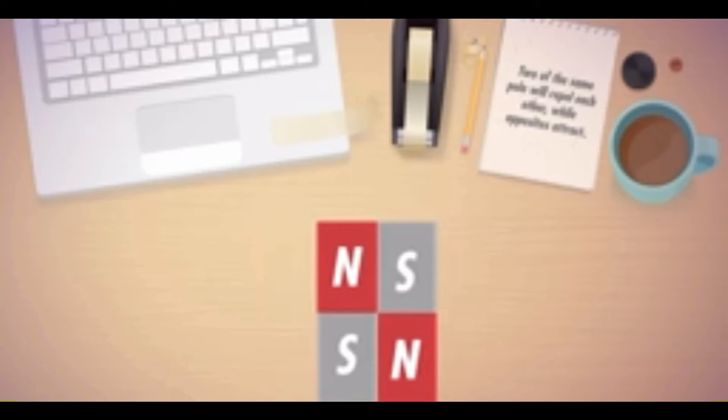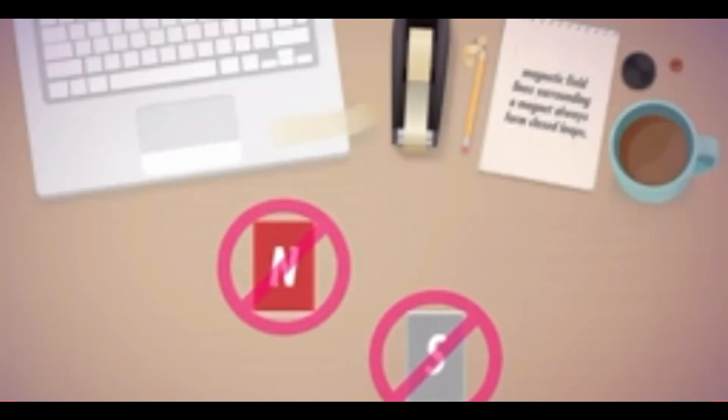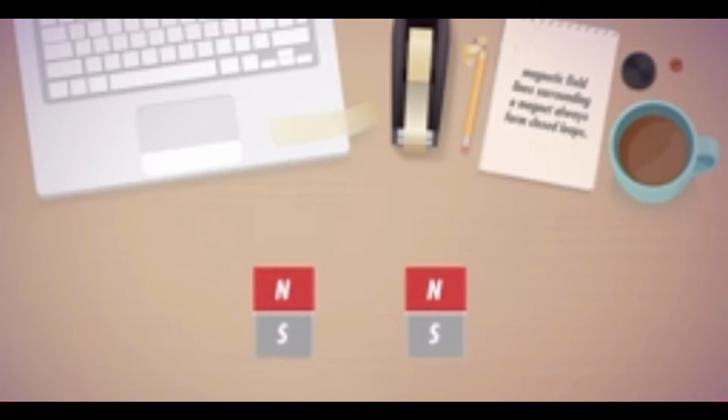Bar magnets with different poles attract each other. Bar magnets with same poles repel each other. If a bar magnet is chopped into two pieces, it cannot be a single pole. The magnet still has two poles.